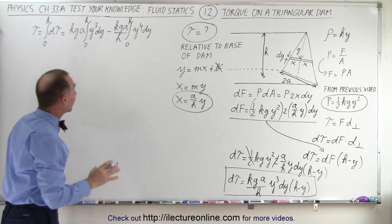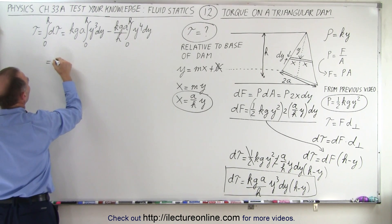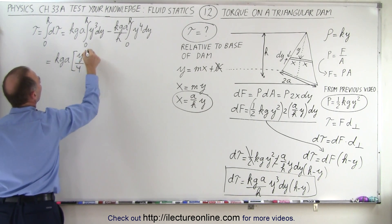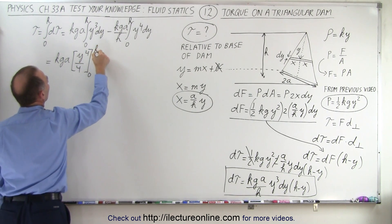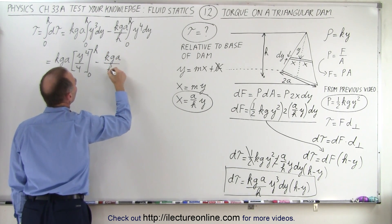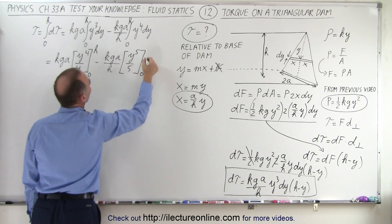Okay. So now we're ready to integrate both of those integrals. So this is going to be equal to Kg A times y to the 4th over 4, evaluated from 0 to h, minus... Here we're going to end up with Kg A over h times y to the 5th over 5 from 0 to h.